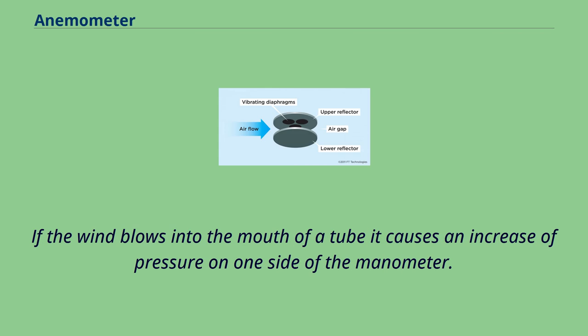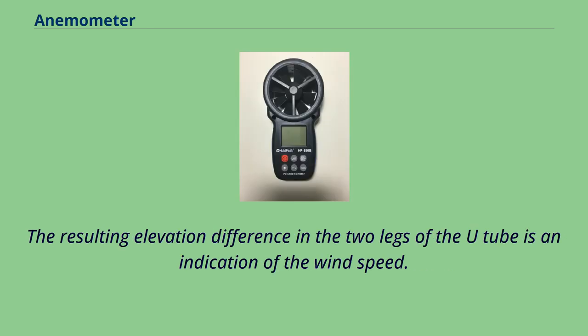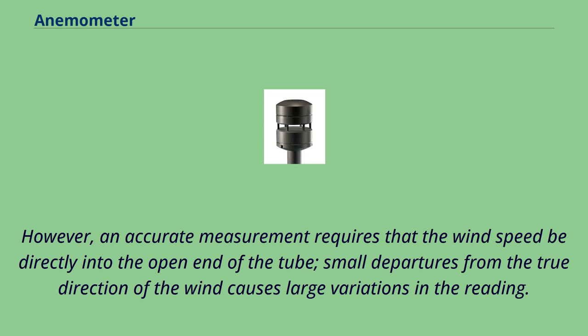However, an accurate measurement requires that the wind speed be directly into the open end of the tube. Small departures from the true direction of the wind causes large variations in the reading.